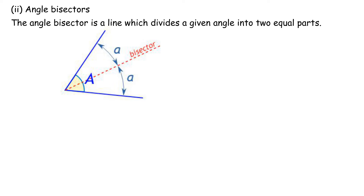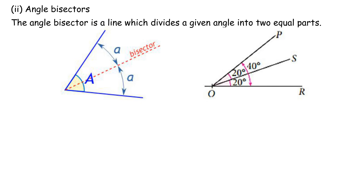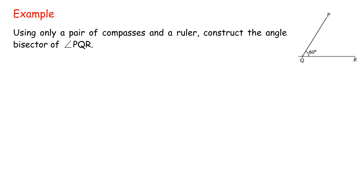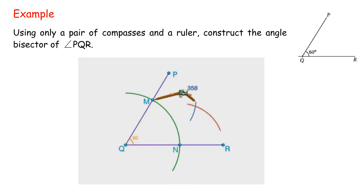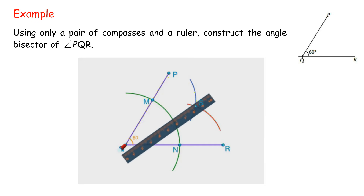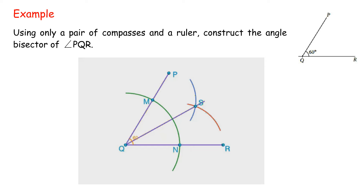2. Angle bisectors. The angle bisector is a line which divides a given angle into two equal parts. For example, line OS is the angle bisector of angle PQR. Using only a pair of compasses and a ruler: 1. Construct a long arc from Q intersecting both QP and QR; mark the two points of intersection as M and N. 2. With the same distance on the compasses, construct an arc from M and from N so that the arcs intersect; mark the point of intersection as S. 3. Draw a line joining Q and S. QS is the angle bisector of angle PQR. Angle PQS equals angle SQR equals 30 degrees.